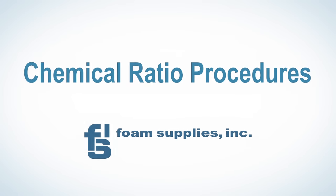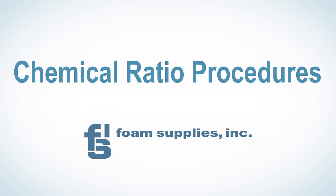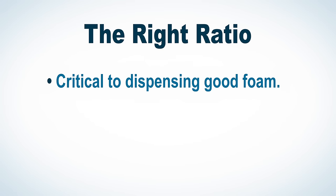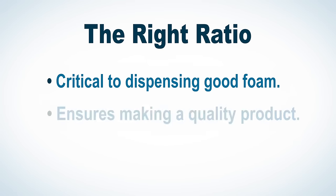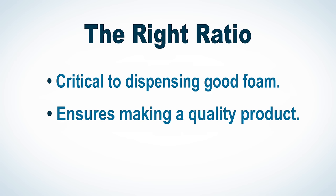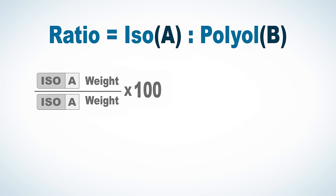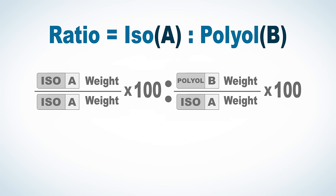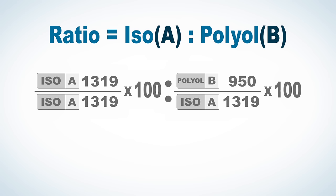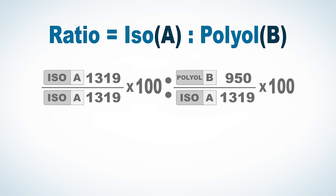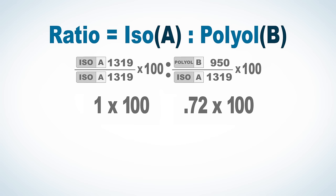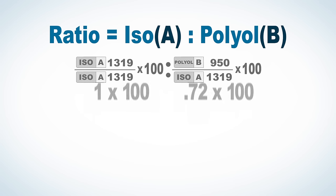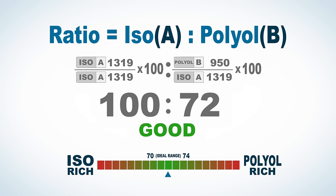The first check is the chemical ratio. Having the proper ratio is critical in dispensing good foam and making a quality end product. Ratio is the weight comparison of the ISO or A output to the polyol or B output. As an example, if the ISO weight is 1319 grams and the polyol weight is 950 grams, the ratio is 100 to 72.